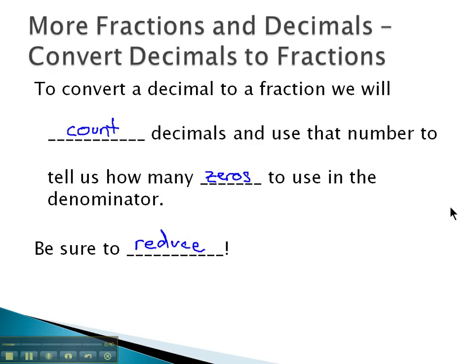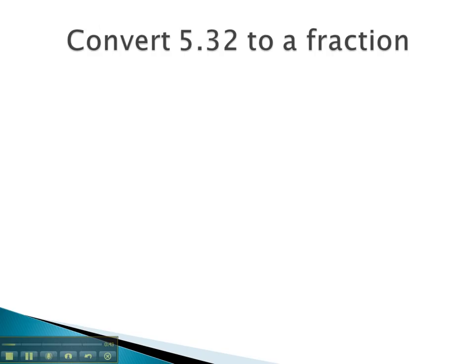So, for example, if we have the decimal 5.32, we're going to make a fraction with the 532 in the numerator, no decimal required now because it's a fraction, and we'll count the decimal digits. There are one, two digits after the decimal.